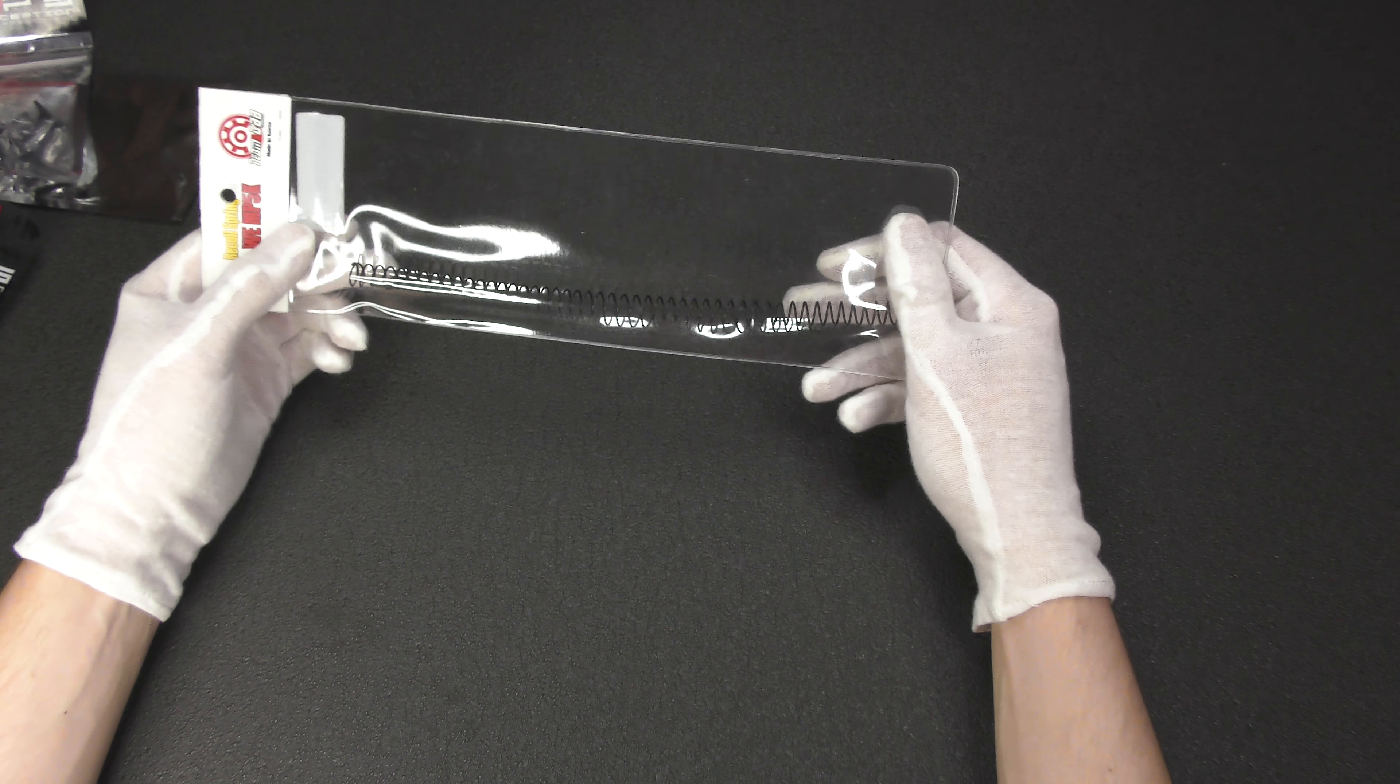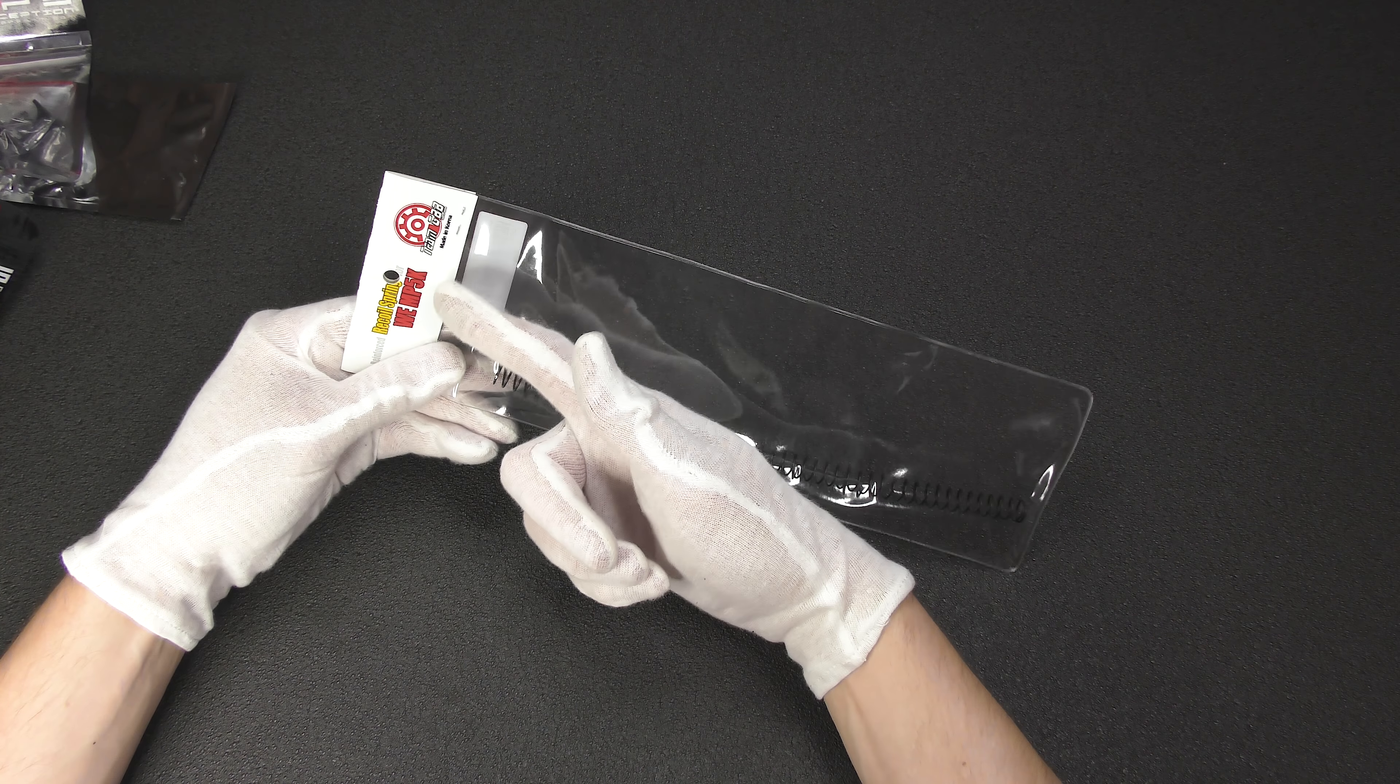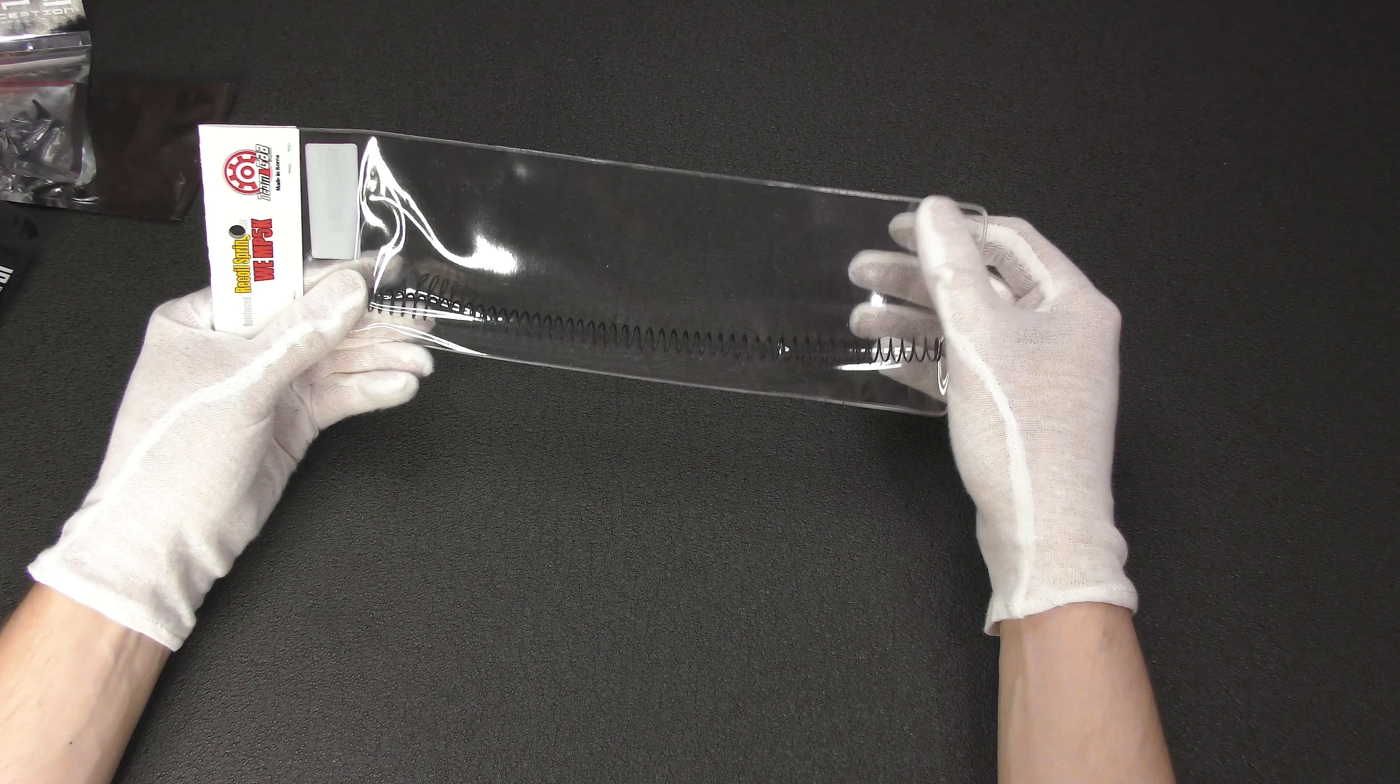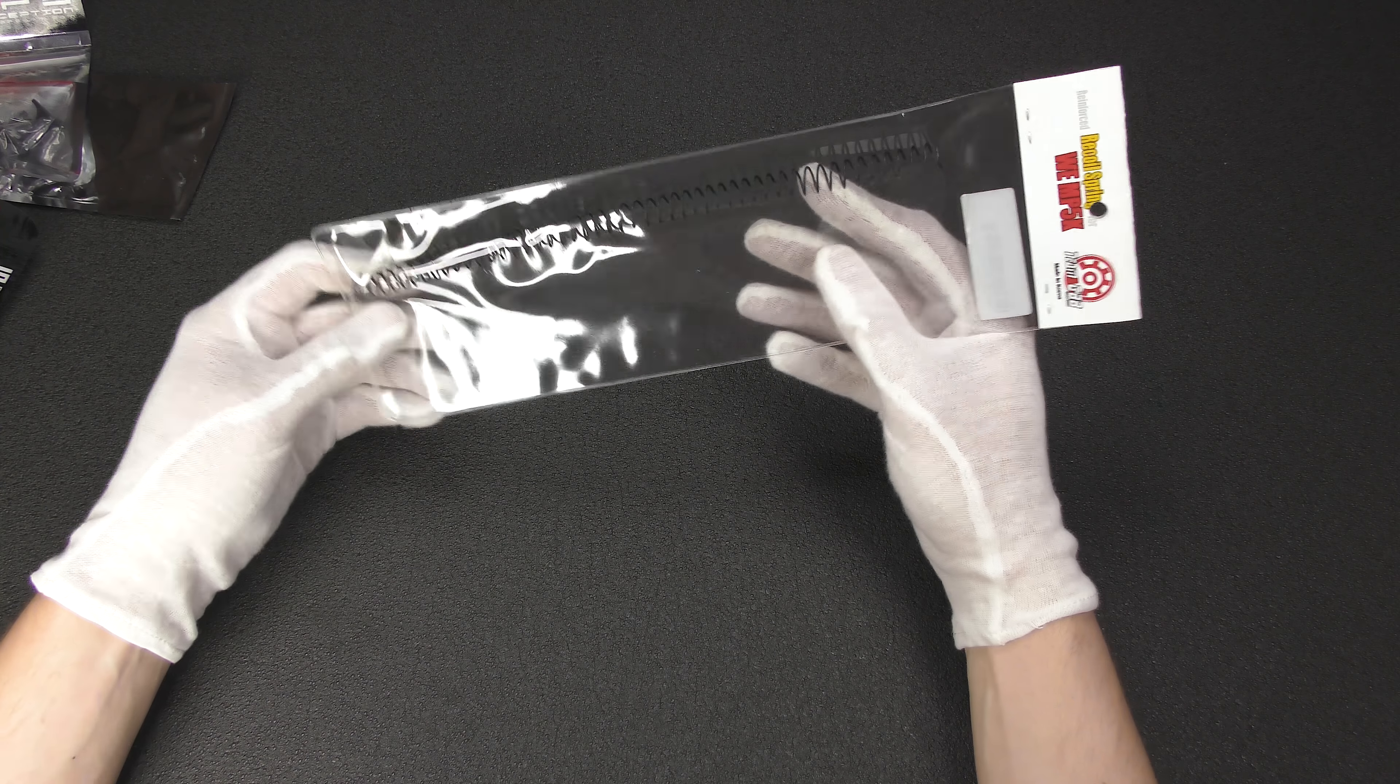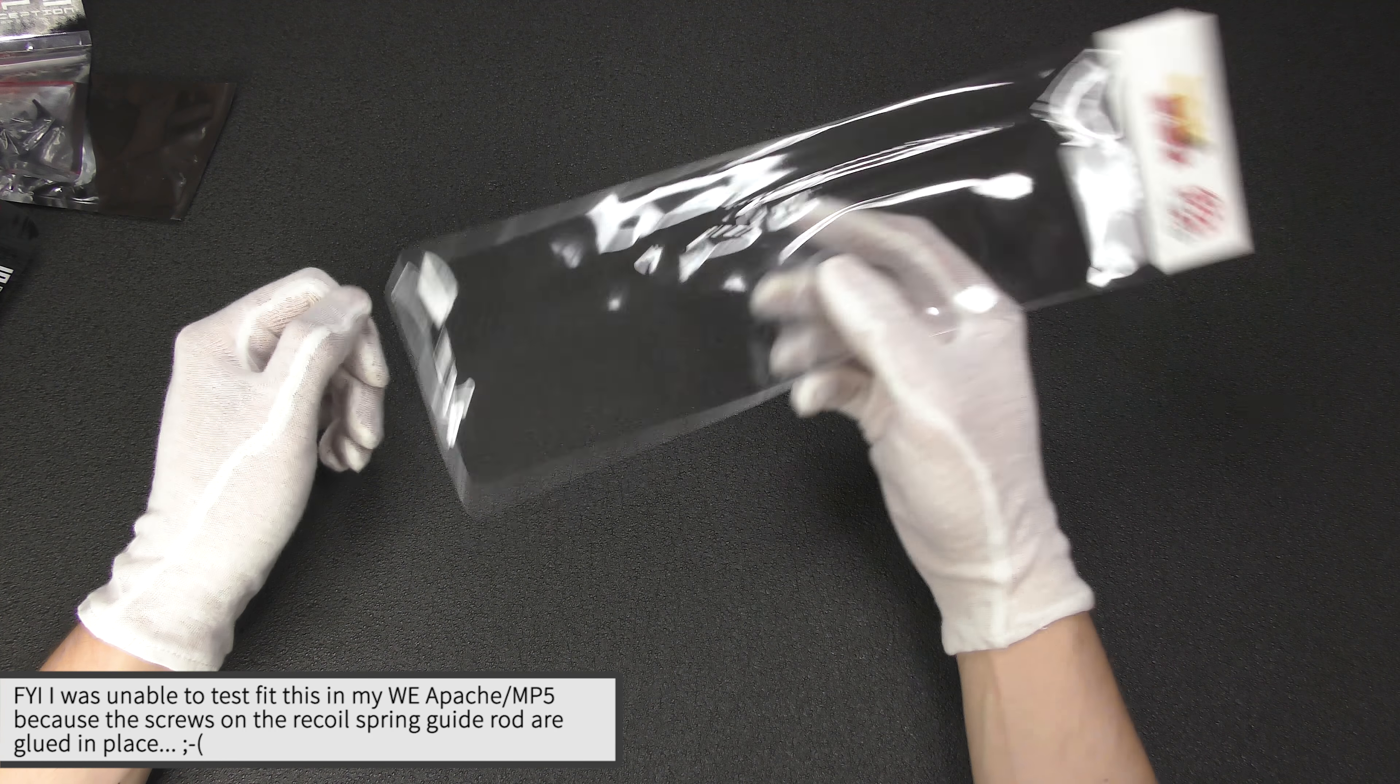The reason why I got this is I have the Apache WE MP5 Apache A2 slash A3 model. I bought the collapsible stock separately. I'm not sure if the K spring is specific to the K model, it might be that that upper is actually a little bit shorter than the ones that I have. But anyway, the thought behind it was instead of installing a rate of fire kit or the spring buffer at the back, if I can replace the actual recoil spring, that would be easier. So I'll experiment with that.